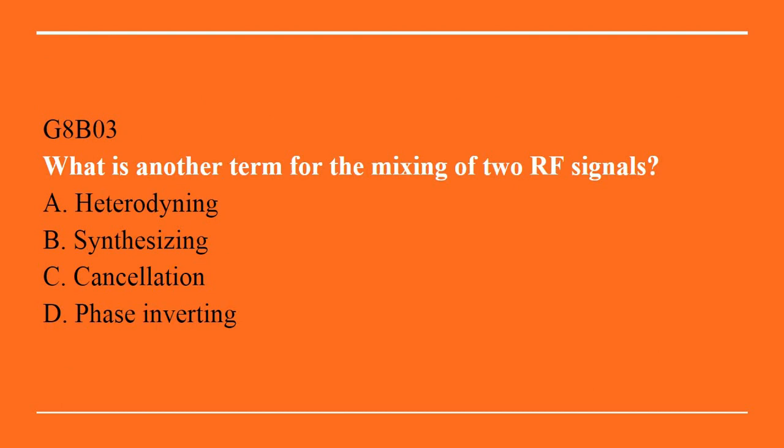G8B03: What is another term for mixing of two RF signals? A. Heterodyning. B. Synthesizing. C. Canceling. D. Phase inverting. Answer is A. Heterodyning.